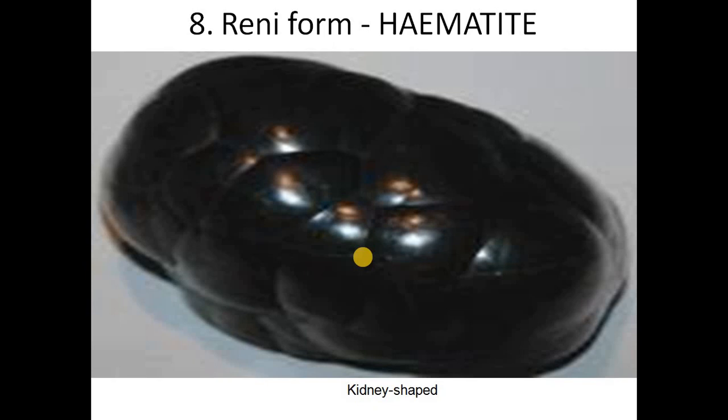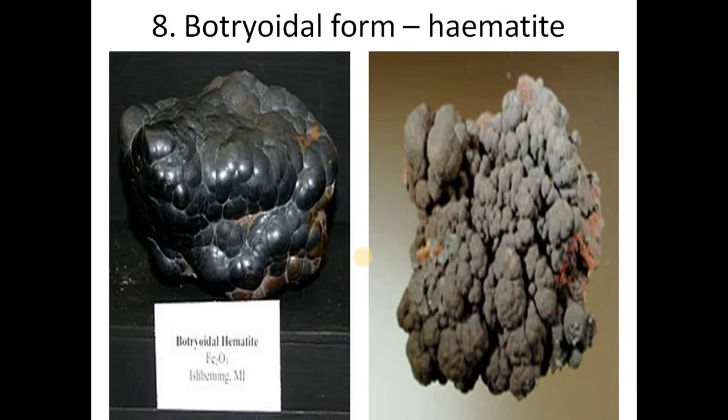Hematite usually occurs in kidney shape — hence we can say hematite exhibits reniform. It occurs in kidney shape. Hematite also occurs in a different form called botryoidal shape. Botryoidal means nothing but an accumulation resembling grapes — very similar to how grapes hang from the top. Hence it is called botryoidal form.